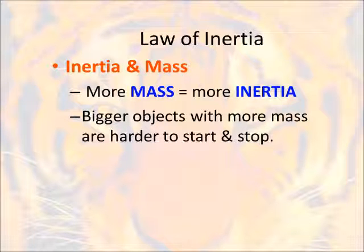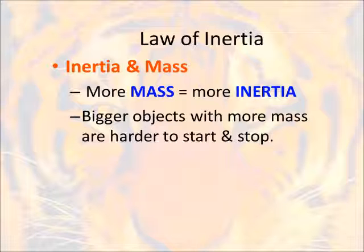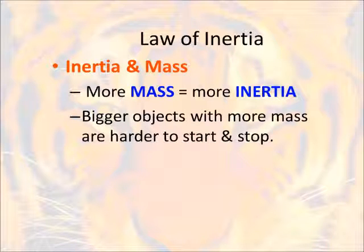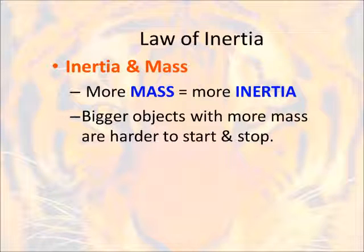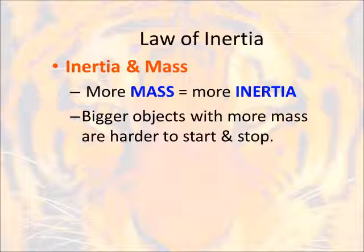When we think about inertia, it has a direct tie-in with the mass of the object. The more mass an object has, the more inertia it has. Bigger objects with more mass are going to be much harder to start and stop. Think of a little marble rolling at you down a hill — it's pretty easy to stop because it doesn't have a lot of mass or inertia. Now think of a big boulder that's six feet tall. If that starts rolling down a mountain, it's going to be incredibly hard to stop.